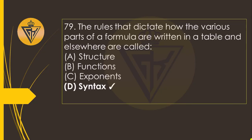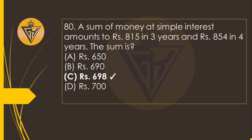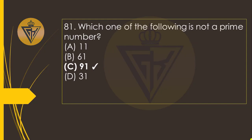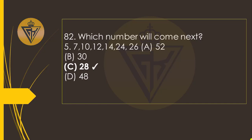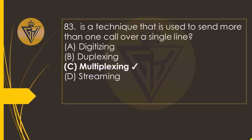The rules that dictate how the various parts of a formula are written in a table and elsewhere are called the option D: Syntax. Which number will come next? The option C: 28. A technique that is used to send more than one call over a single line is the option C: Multiplexing.